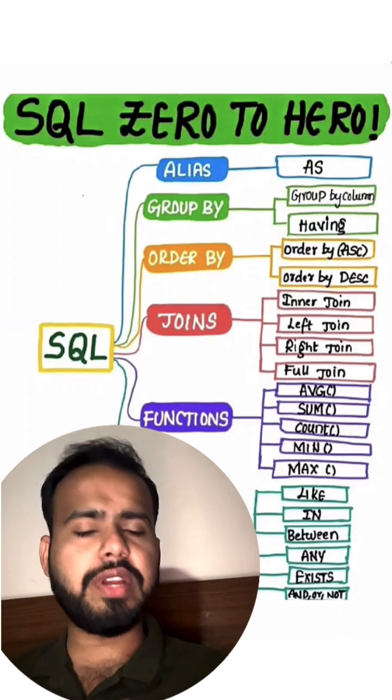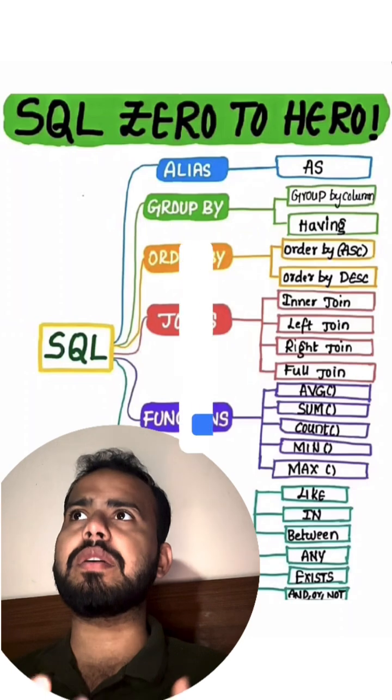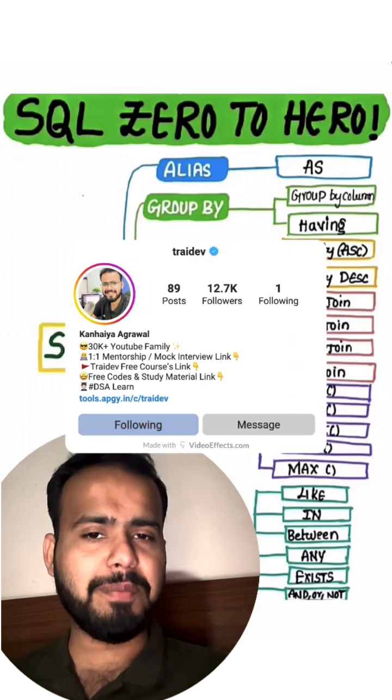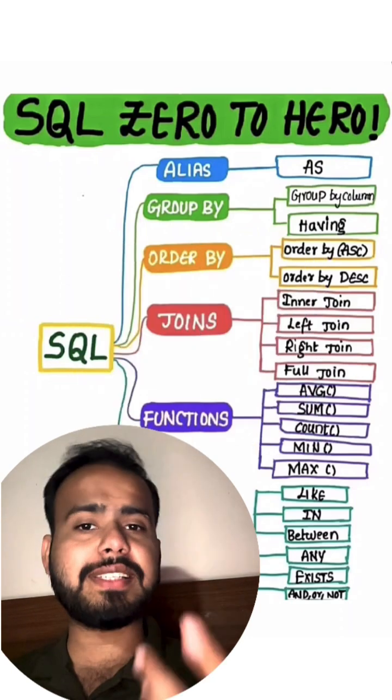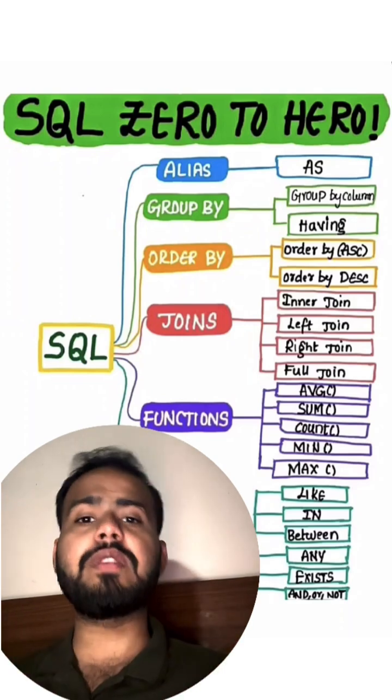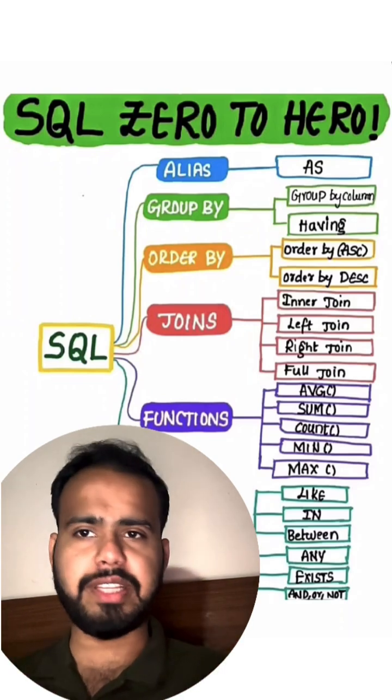Then ORDER BY - in ORDER BY you can add the column name. It can be character based ORDER BY or number based ORDER BY, and you can define ascending or descending like A to Z, Z to A, zero to 100, 100 to zero, like that.